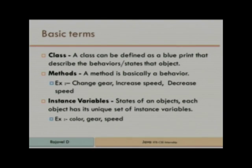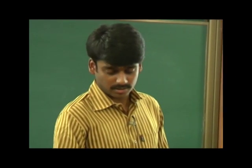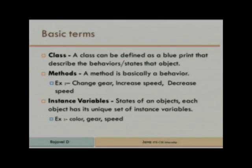Next one is a class. What is a class? A class is the integration of attributes, member variables, and member functions. It describes the state and behavior. And a method — the behavior we can achieve through a method or function. Next one is an instance variable. Instance variable defines the state — color, size, everything is a state — and we can achieve this through an instance variable. These are the basic terms we almost use in Java.